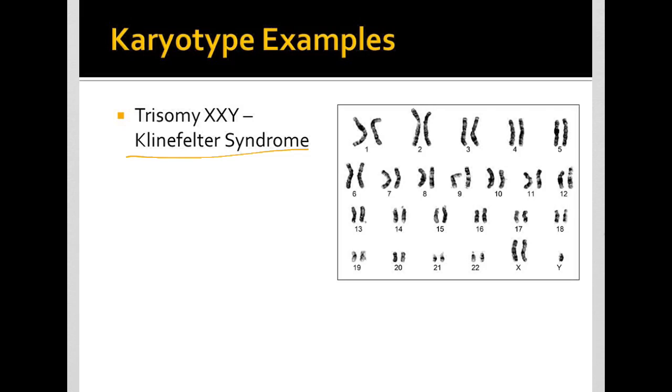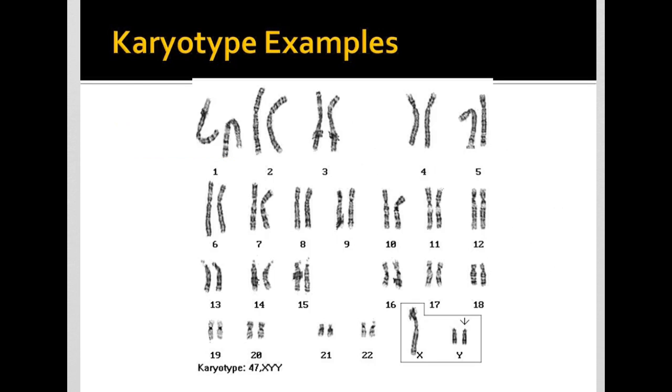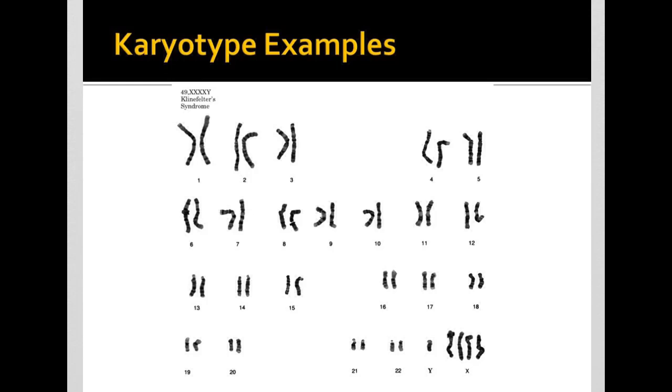Klinefelter syndrome is actually going to have a lot of iterations of Klinefelter's. It can be multiple X's and or multiple Y's. So here, this individual is XYY. This is included in Klinefelter syndrome. This person, if you can imagine it, check this out, is XXXXY. That is also considered Klinefelter syndrome.